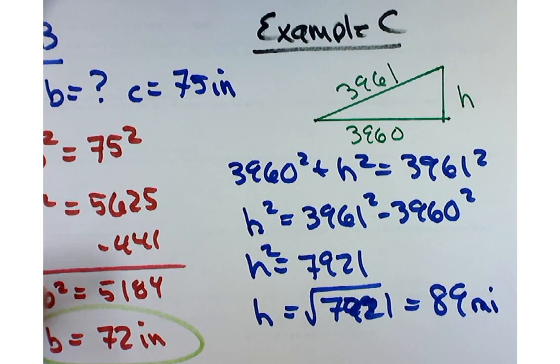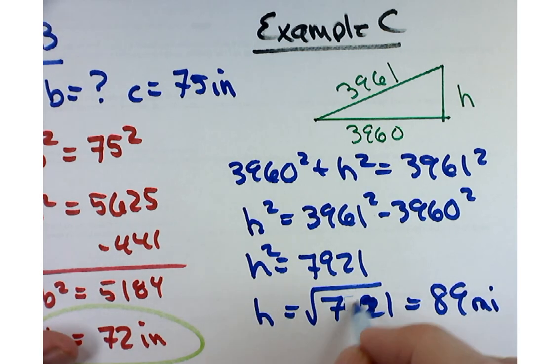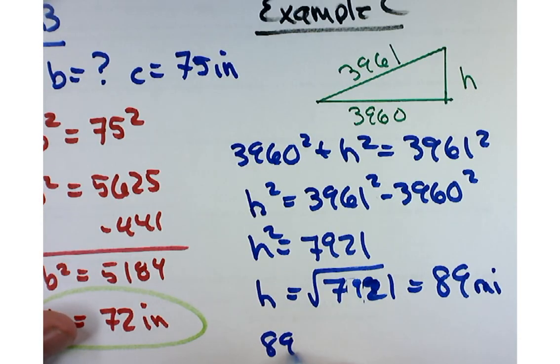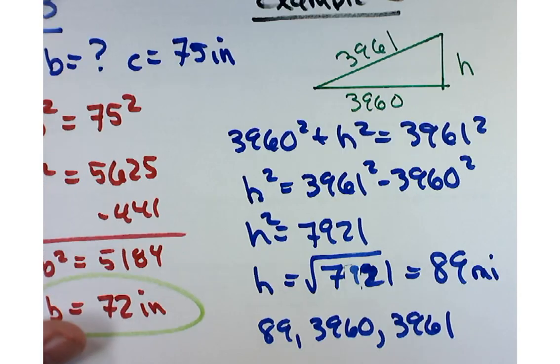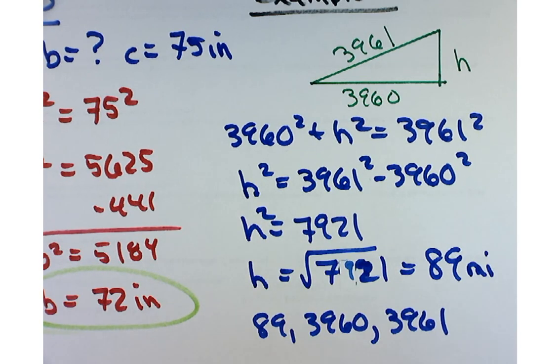Kind of cool because it worked out even. I didn't expect this to work out even. So that makes these numbers a Pythagorean triple: 89, 3,960, and 3,961. The answer is 89 miles.